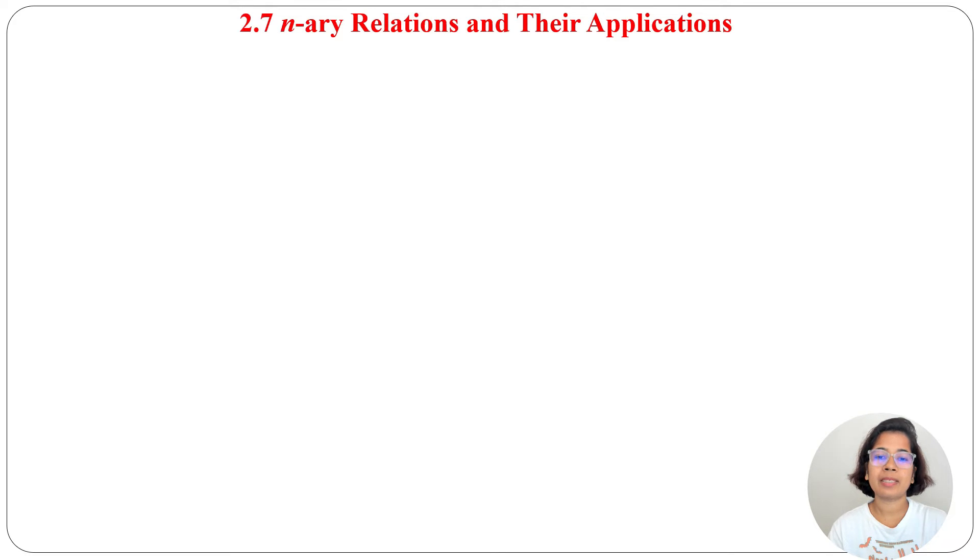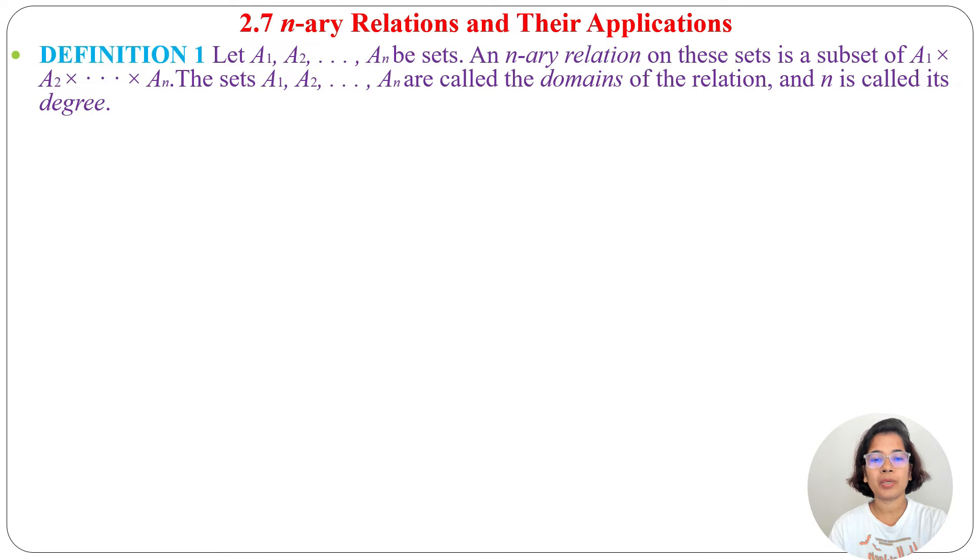Now, the definition of n-ary relation: Let A₁, A₂, ..., Aₙ be sets. An n-ary relation on these sets is a subset of A₁ × A₂ × ... × Aₙ. The sets A₁, A₂, ..., Aₙ are called the domains of the relation, and n is called its degree. In case of binary relations, the degree is 2.